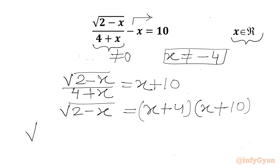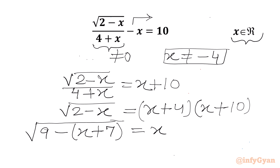Now we can write square root of (2 minus x). This can be written as square root of (9 minus (x plus 7)), since 9 minus 7 is 2. On the RHS we can write x plus 4 as (x plus 7) minus 3, since 7 minus 3 is 4, and x plus 10 as (x plus 7) plus 3.